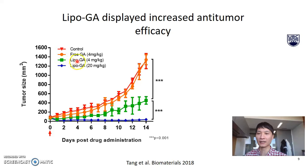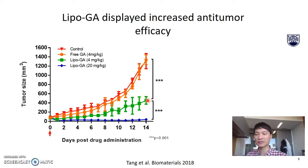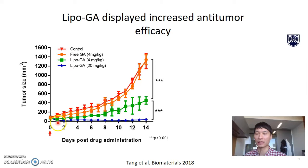The matched-dose lipo-GA is significantly improved in terms of efficacy compared to the free drug, as shown in the green line. The most impressive formulation is lipo-GA at the high dose of 20 milligrams per kilogram — only one injection completely regressed the tumor for about two weeks.